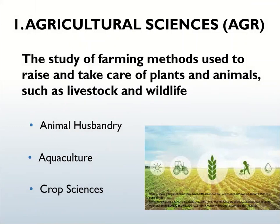The agricultural sciences category involves the study of farming methods used to raise and take care of plants and animals, such as livestock and wildlife. This category is subdivided into three smaller topics: animal husbandry, which is concerned with livestock animals raised for meat, fiber, milk, eggs and other products; aquaculture, the farming of aquatic organisms including fish, molluscs, crustaceans and plants in controlled aquatic environments; and crop sciences, the study of food crops.